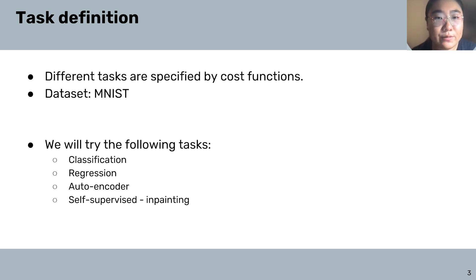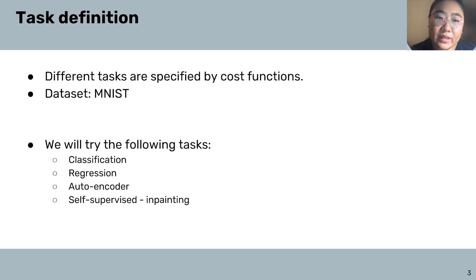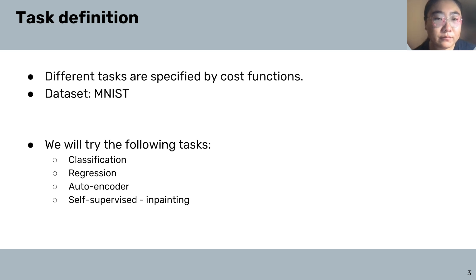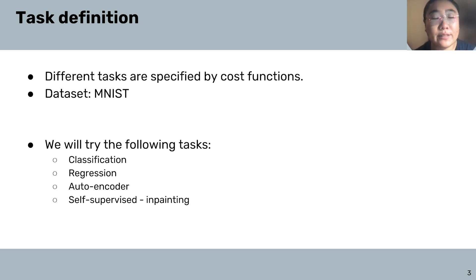MNIST has been widely used in the machine learning community. We will try the following tasks. First is classification, where given a specific image of digits, we would like the network to tell us which digit it is. The second is regression, where with a specific image as input, we would like the network to tell us how many on or off — basically white or black — pixels there are in an image.